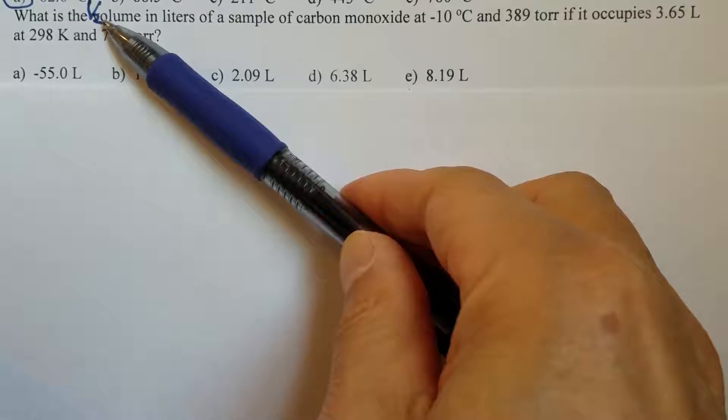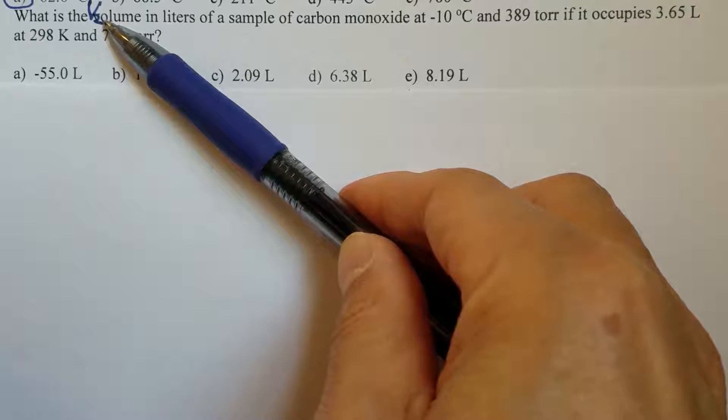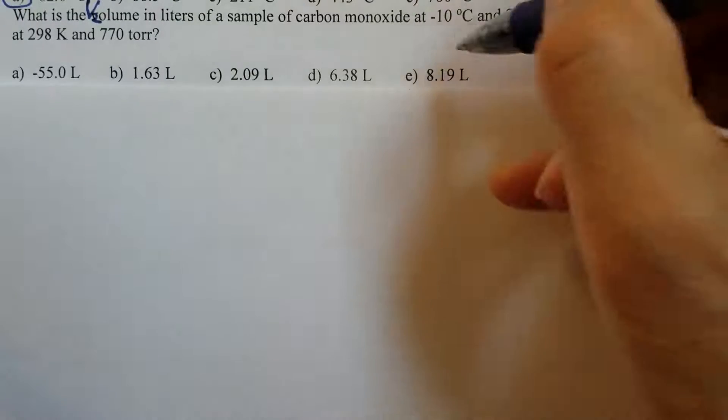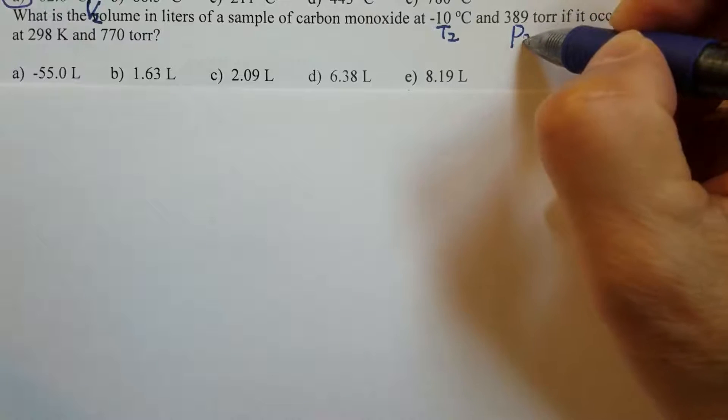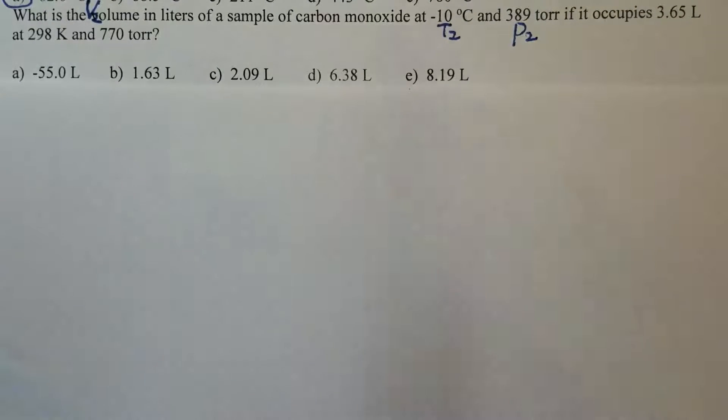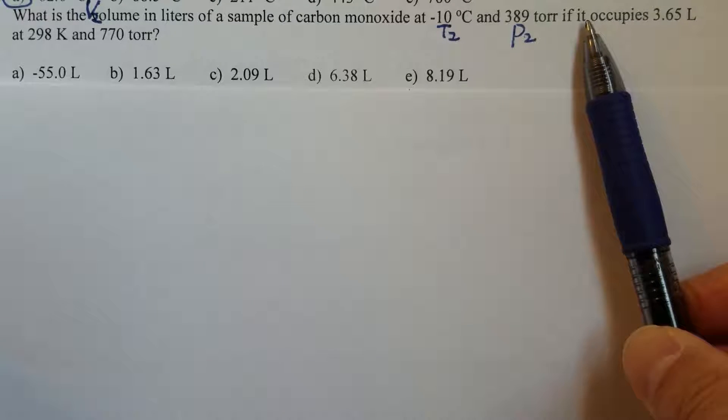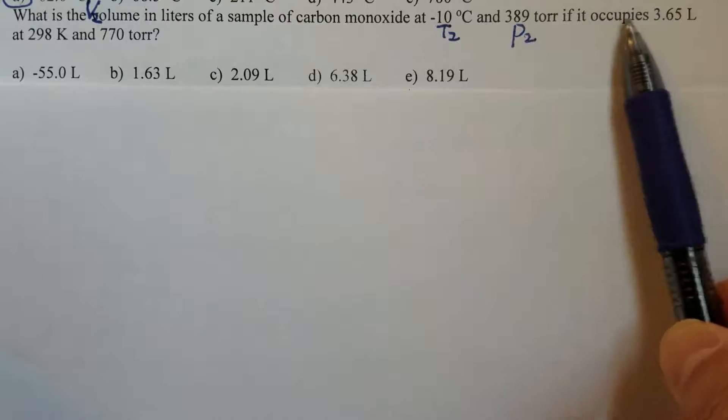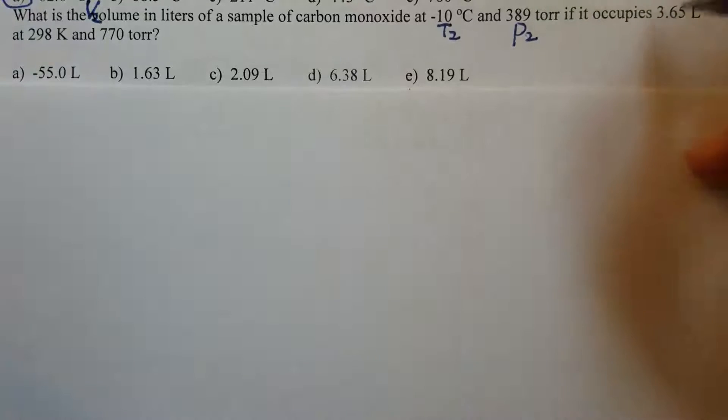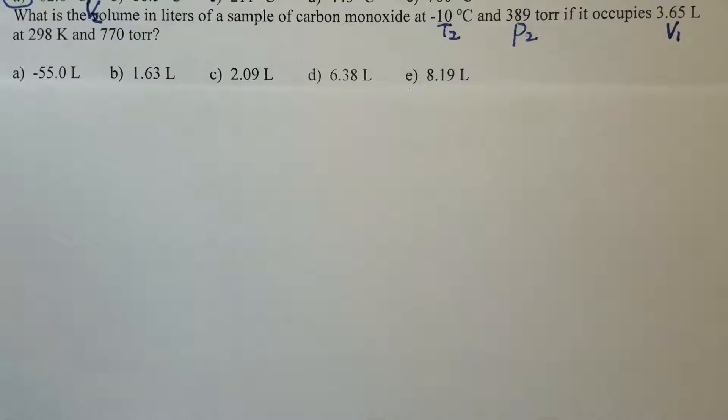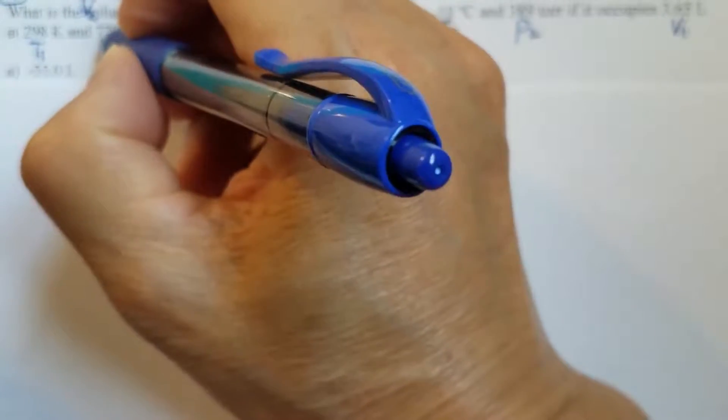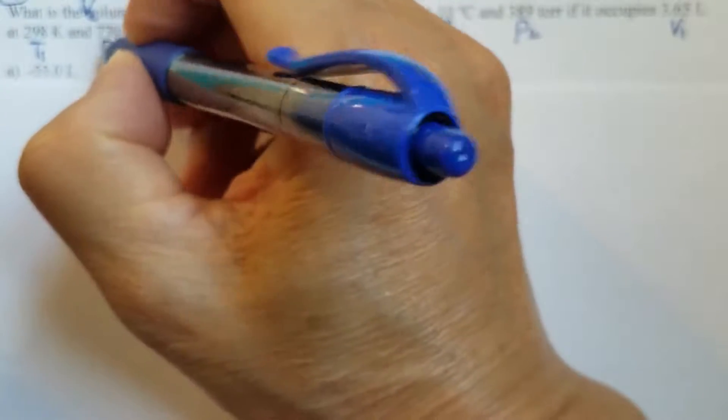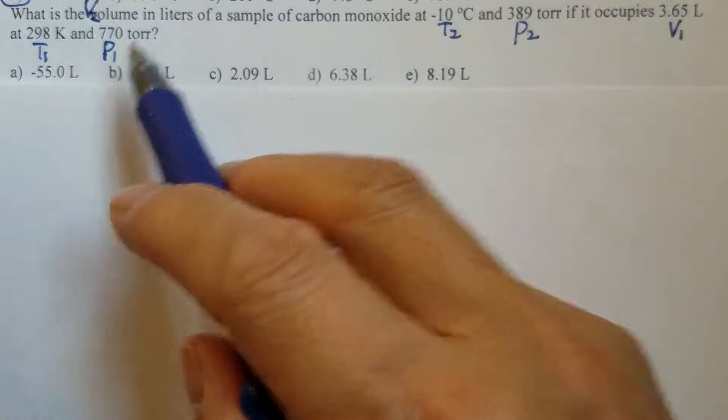So therefore, if this is V2, what we are going to calculate is V2, then this has to be T2 and this has to be P2. All right, then let's look at the other side of information. If it occupies 3.65 liters, we have the liters, so we use V1 and then temperature T1, pressure P1. All right, so these three go together.